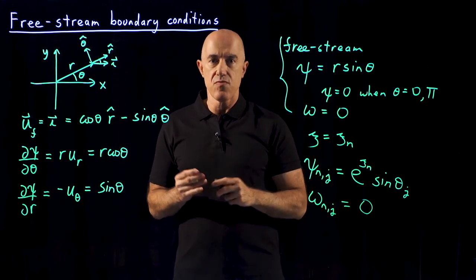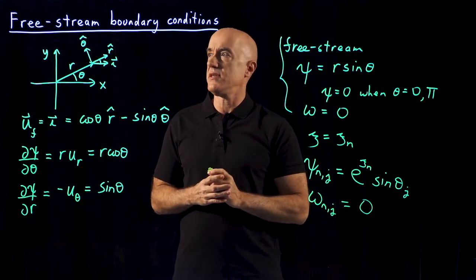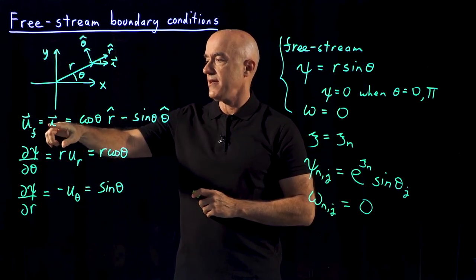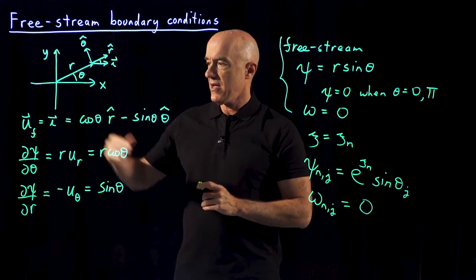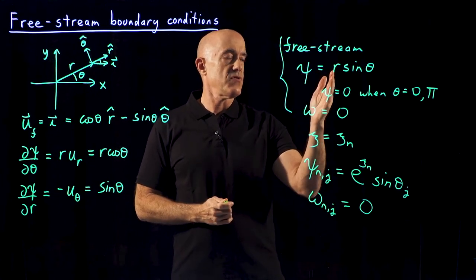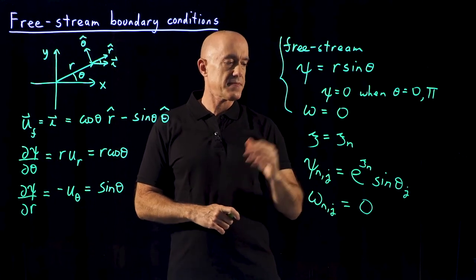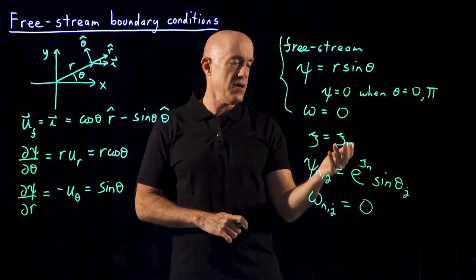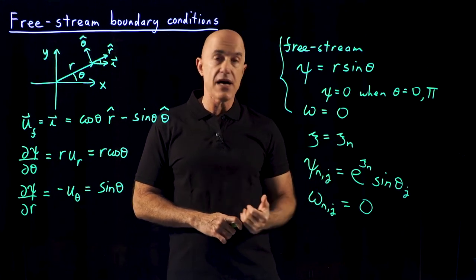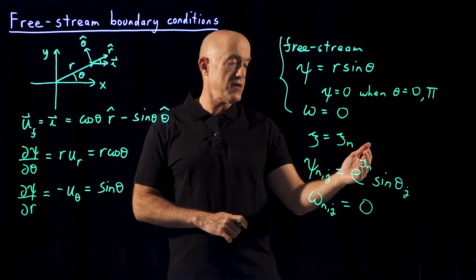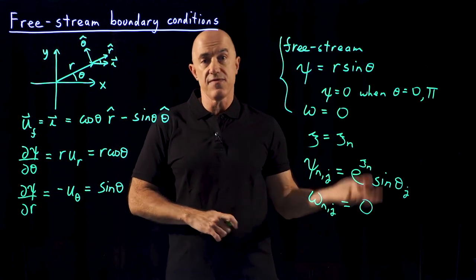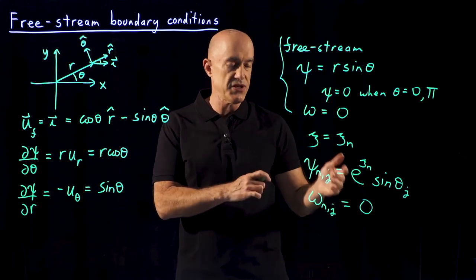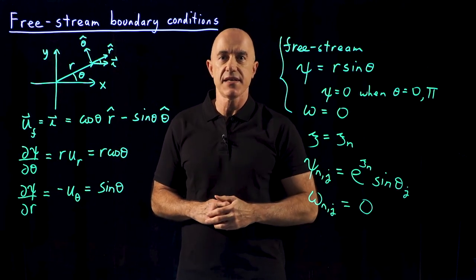Let me summarize. Once you have the iteration equations, you then need the boundary conditions. Here we talk about the free stream boundary conditions. We want the free stream velocity equal to the unit vector in the x direction. For that to happen, we need to set the stream function equal to r sine theta in the free stream. When we translate that to our grid, that occurs when the variable psi is at its maximum value, psi sub n. The free stream boundary conditions will be psi of n,j equal to e to the psi_n sine theta_j, and the vorticity omega sub n,j is equal to zero. This is what you will implement in your simulation code. I'm Jeff Chasnov. Thanks for watching and I'll see you in the next video.